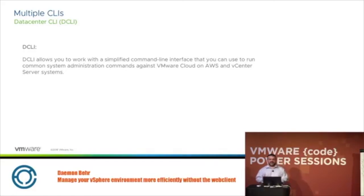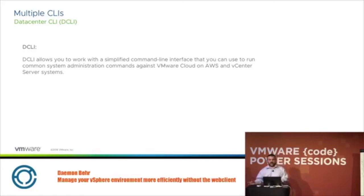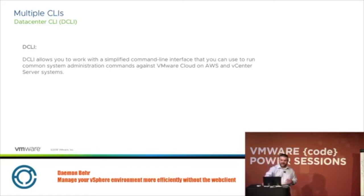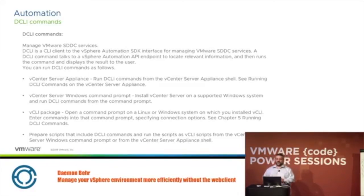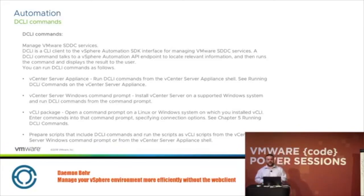The DCLI is really interesting because it connects into the vSphere Automation APIs in your environment. The DCLI is something you can use to manage your VMs or VMC on AWS environment as well as your vCenter environment — it's very, very powerful. You can access DCLI through a couple of different means: by logging on to your vCenter Server Appliance and running DCLI commands directly, or by accessing it through the vCLI package.